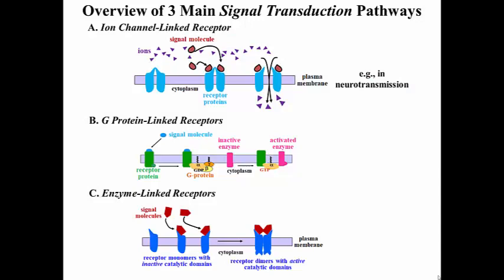Here are three main pathways for signal transduction, officially defined as the process of getting an extracellular signal inside the cell when the signal molecule itself cannot cross the membrane.